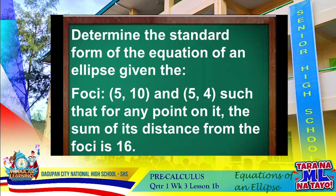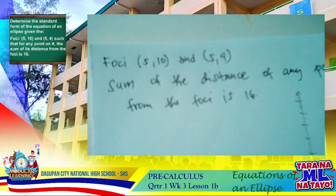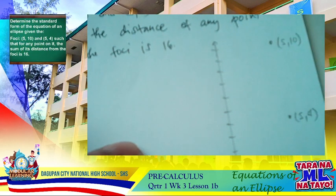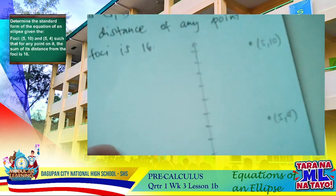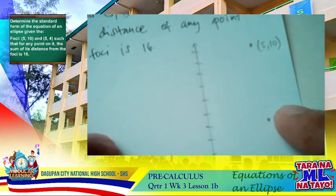If we are going to plot our foci, which are (5, 10) and (5, 4), what you observe is that this ellipse is said to be vertical, so the type of our ellipse is vertical along your y-axis.